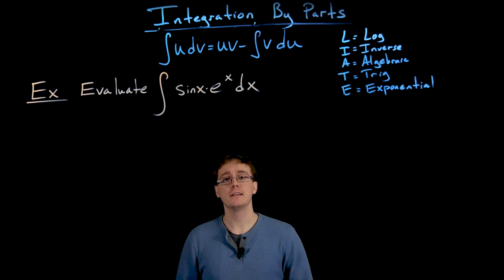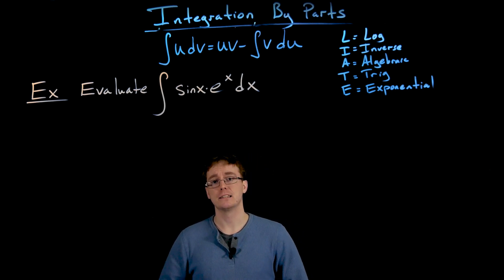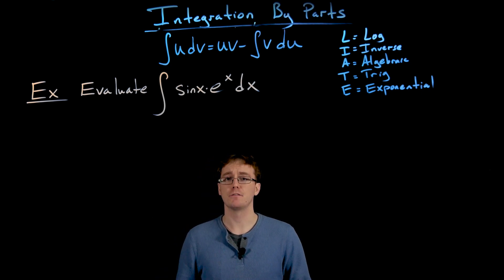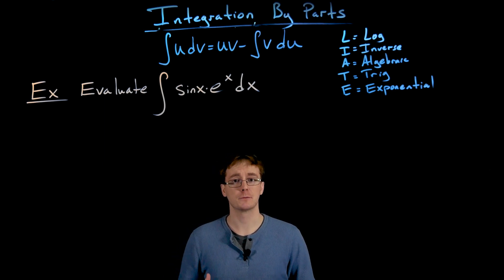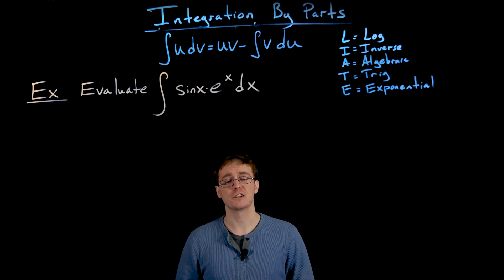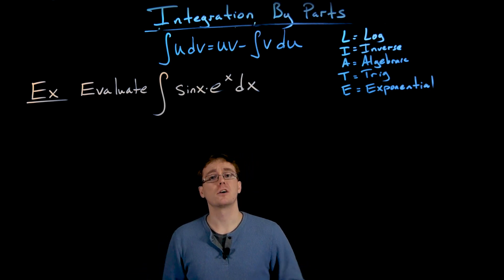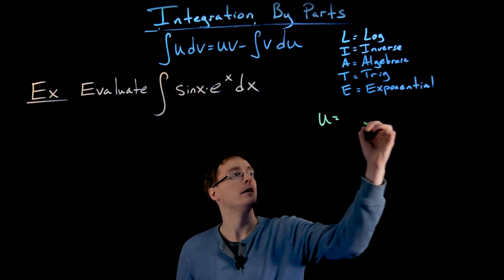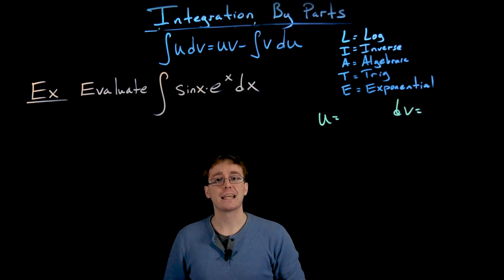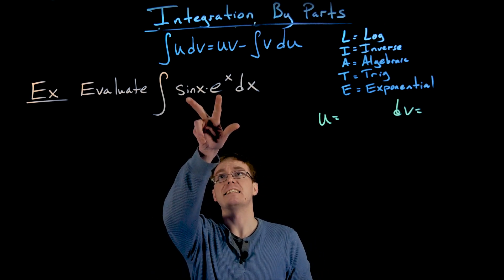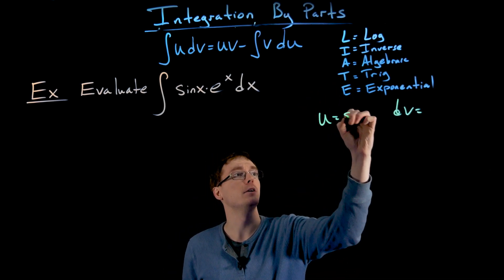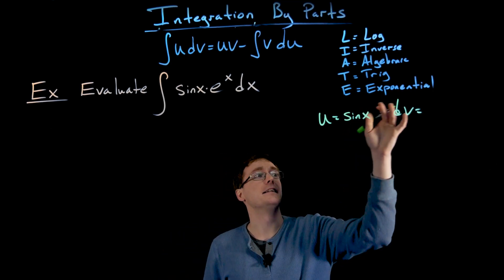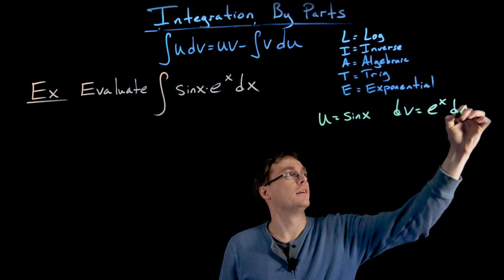In this next example, we evaluate the indefinite integral of sine of x times e to the x. This example requires close attention throughout because our original integral will reappear during the process, and we'll need to use integral algebra to find the answer. We start as always by finding u and dv. Using LIATE, sine of x is a trig function and e to the x is exponential, so u equals sine of x and dv equals e to the x dx.